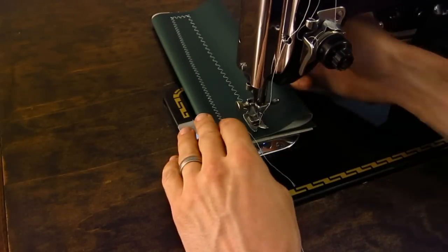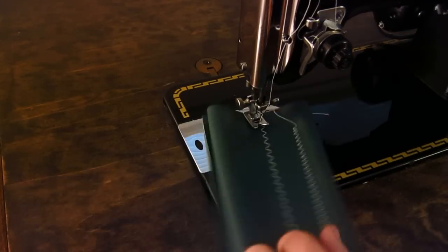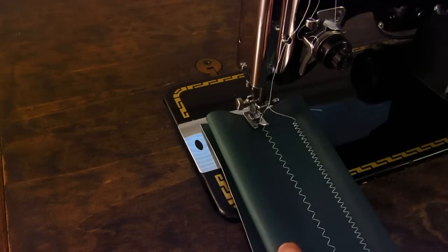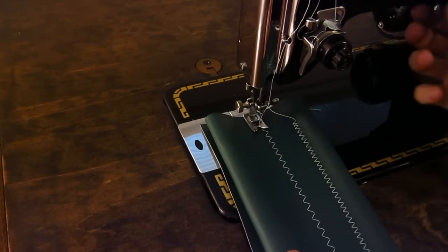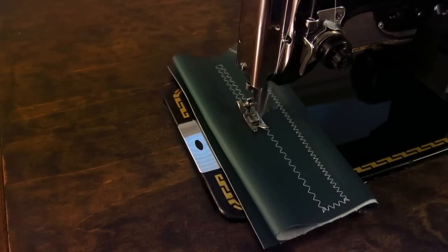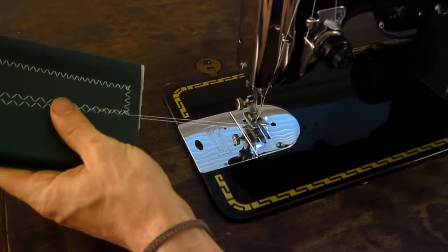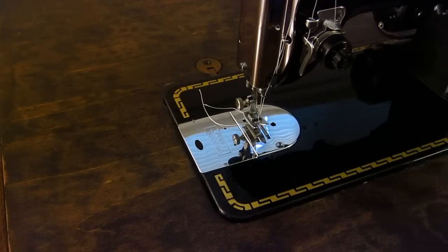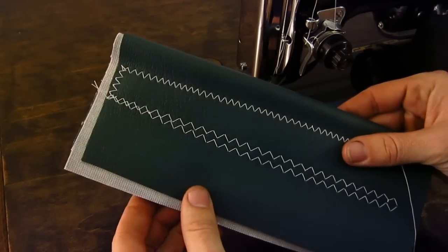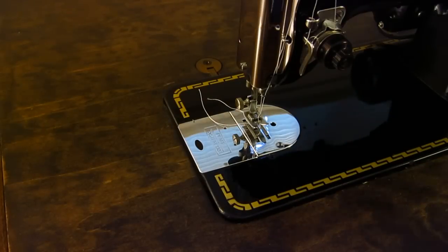But yeah. And then let's do the longest stitch, longest and widest. You can see how fast the machine goes when you want it to. So it'll sew through all this stuff really precise. It has needle position, so you can adjust the position of the needle left, right, or center, which is a pretty big deal.